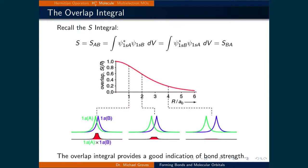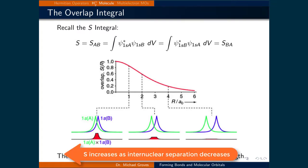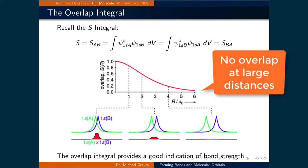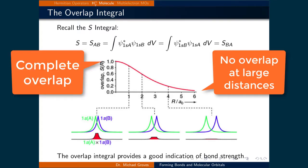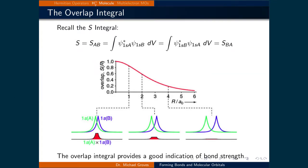Let's now examine the solutions we just solved for more closely. Recall the S integral, where S is equal to the integral over all space of psi star 1s of nuclei A times psi 1s of nuclei B. This is called the overlap integral. It quantifies how much each of the two nuclei-centered 1s orbitals overlap. Its value is dependent upon the internuclear separation and increases as the nuclei move closer together. It ranges between 0, meaning no overlap, and 1, meaning perfect overlap. The overlap integral gives a good indication of bond strength, since high overlap means high ability for the electron to be shared, and low overlap means low ability for the electron to be shared.